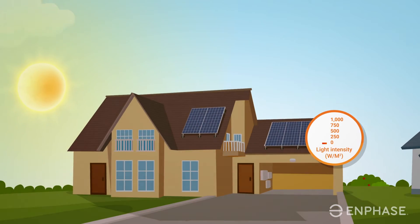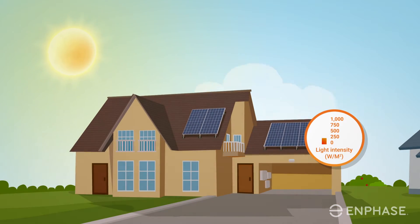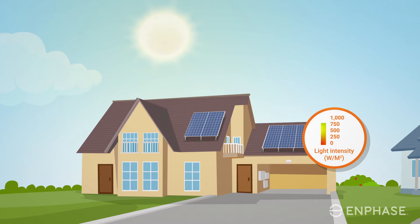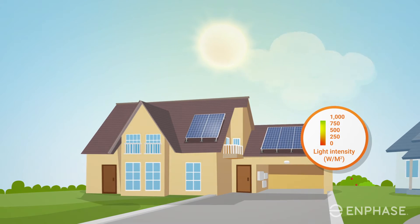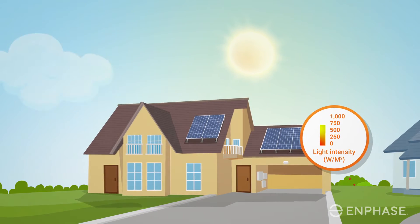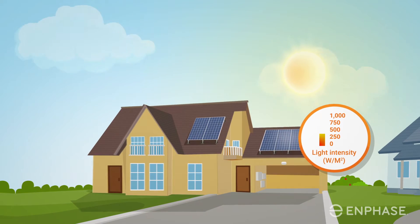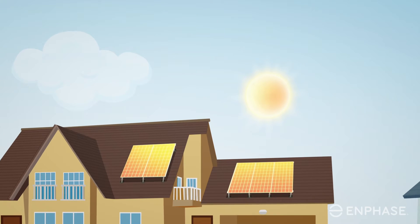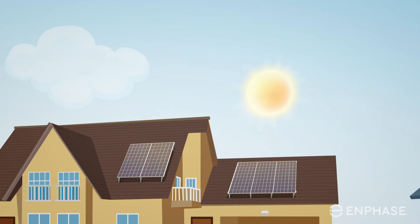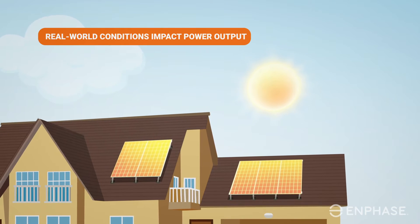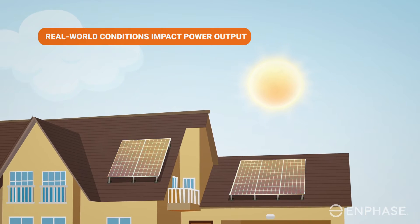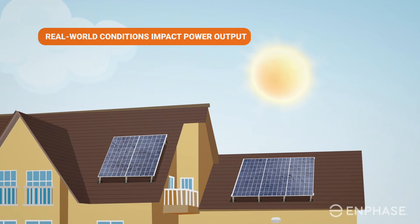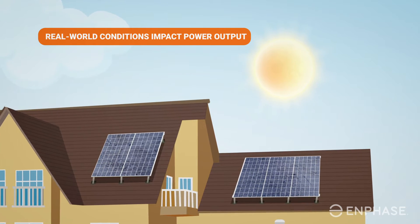In the real world, the power output is relative to the intensity and angle of the sunlight, which varies greatly as the sun rises and moves across the sky, as well as with the seasons of the year. When the sun is strong, the panel will also get very warm, which reduces the potential power output. The panels will also get naturally slightly soiled, which will block some of the sunlight.